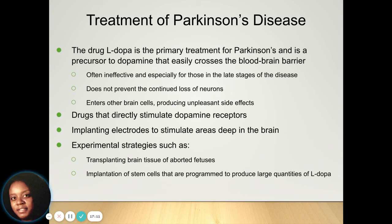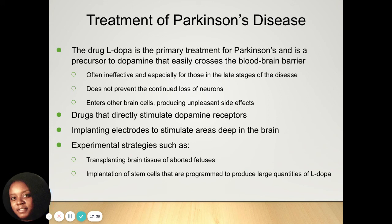The primary way that Parkinson's disease is treated is through a drug called L-DOPA, which is a precursor to dopamine that helps dopamine cross the blood-brain barrier. It can be ineffective in late stages of the disorder, and it does not prevent the loss of neurons — it only helps dopamine cross the blood-brain barrier so that movements can happen more fluidly. Drugs that directly stimulate dopamine receptors or implanting electrodes to stimulate brain areas can also be used. Experimental strategies include transplanting brain tissue from aborted fetuses or implanting stem cells.